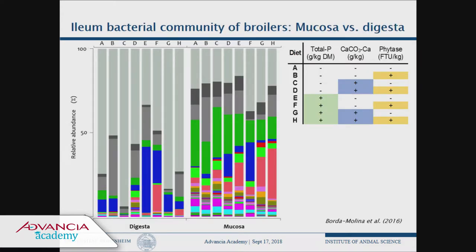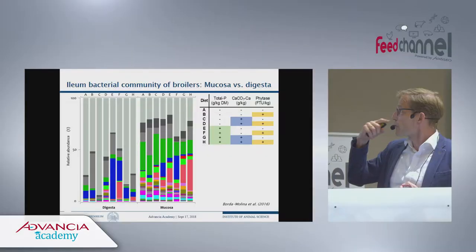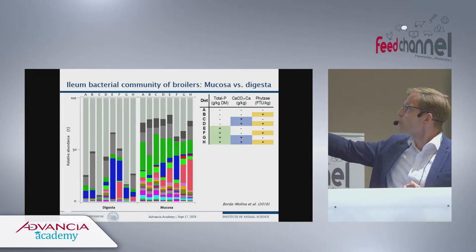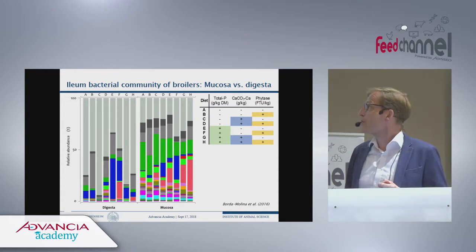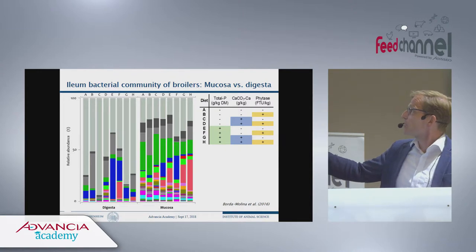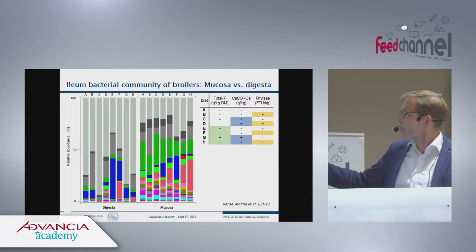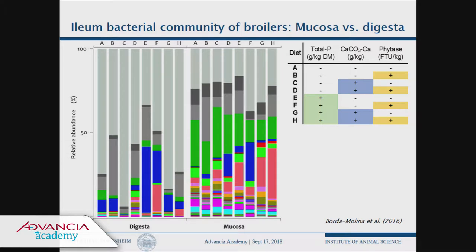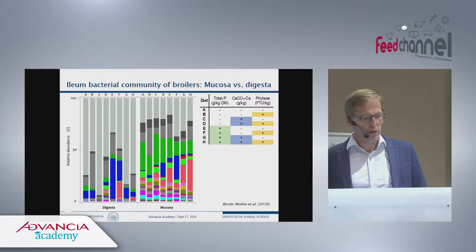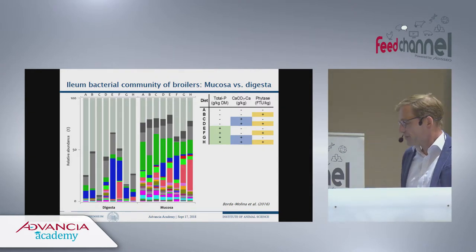To show this with one example — this is from a collaboration with Dr. Kamarina Silva's group in our institute where we used eight different diets differing in phosphorus, calcium, and phytase concentration. These are samples taken from the ileum of broilers. On the left-hand side you have the relative abundance of several microbial groups in the digesta, and on the right-hand side in the mucosa fractions. Just look at the different color patterns on each side — that clearly shows how different the microbiota composition is in these two sections.